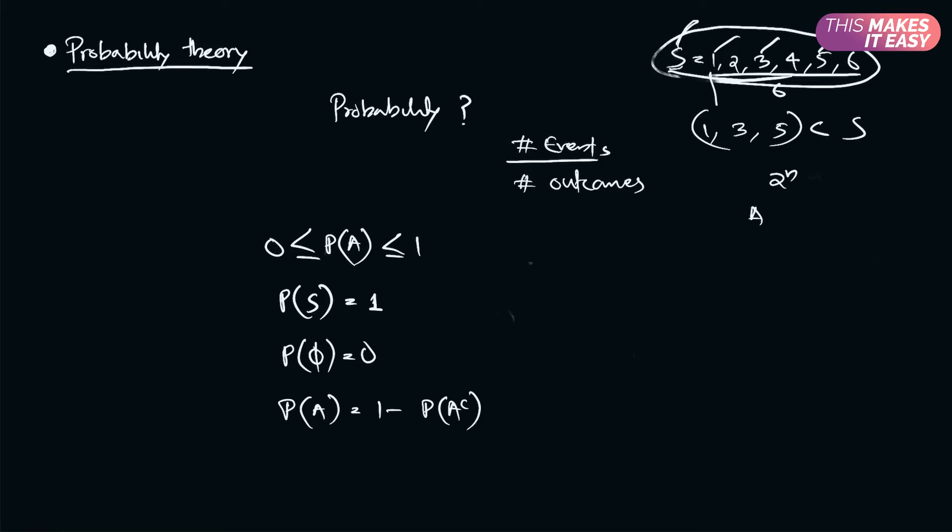In the next video, we will discuss the probability of union of two events, probability of intersection of two events, conditional probability, then Bayes theorem, then we will start different discrete distributions, then continuous distributions.